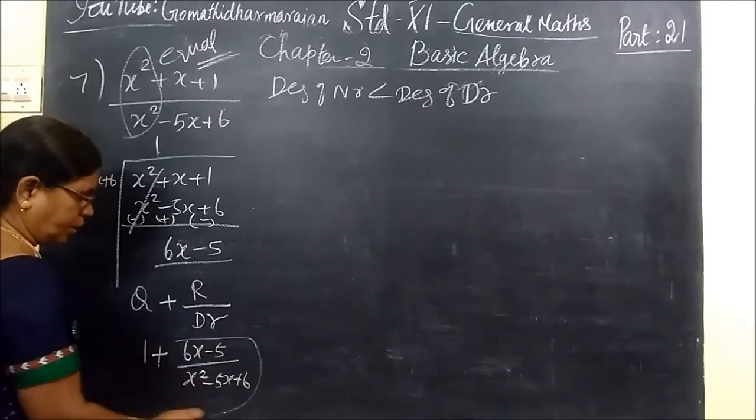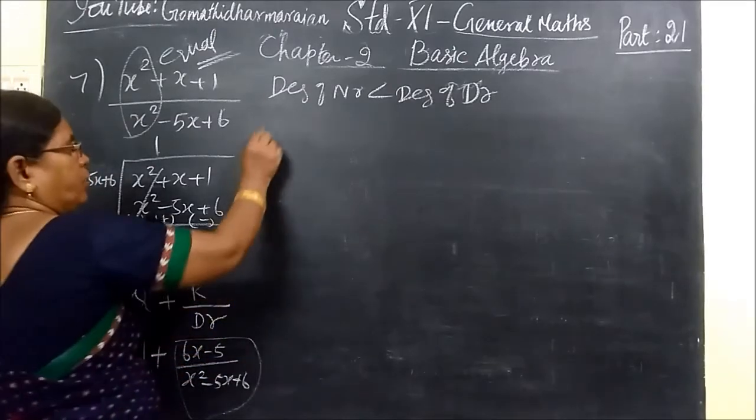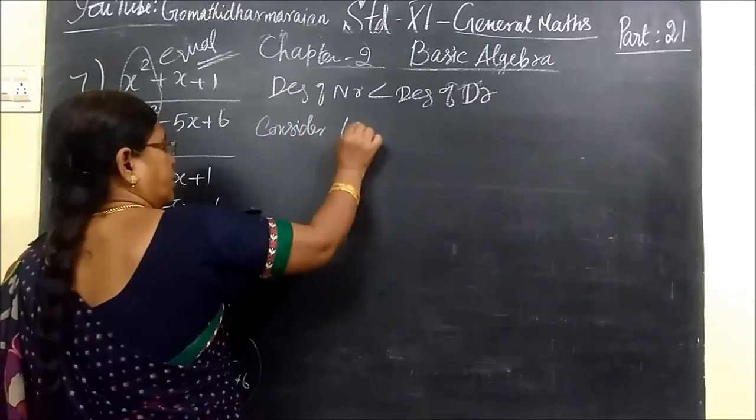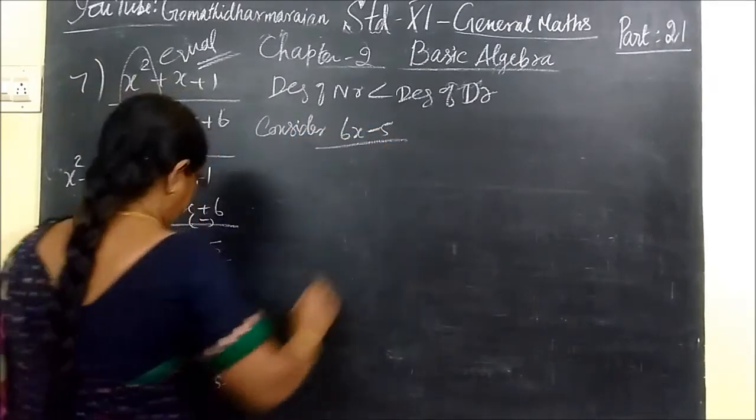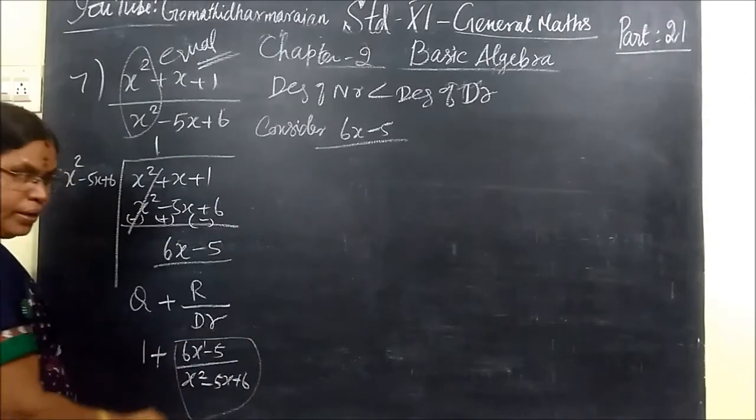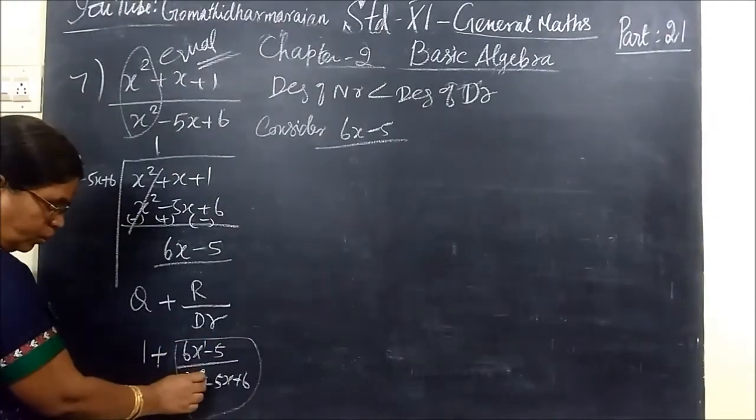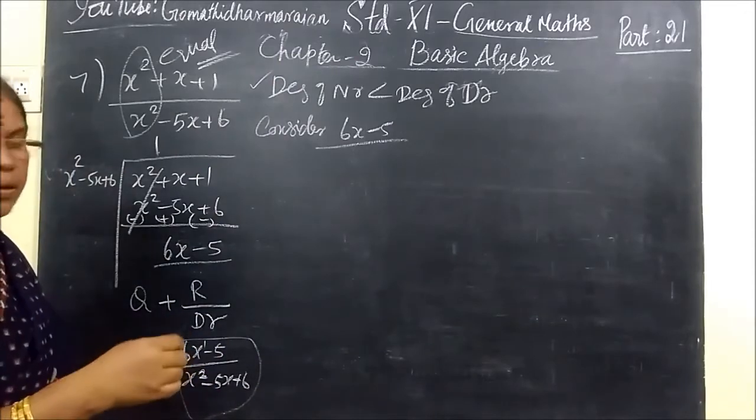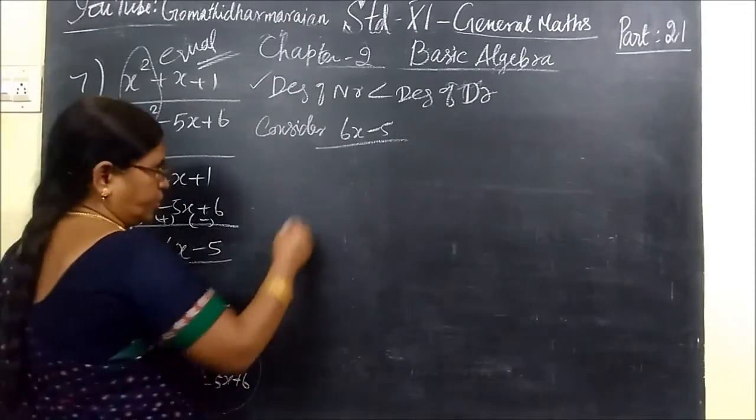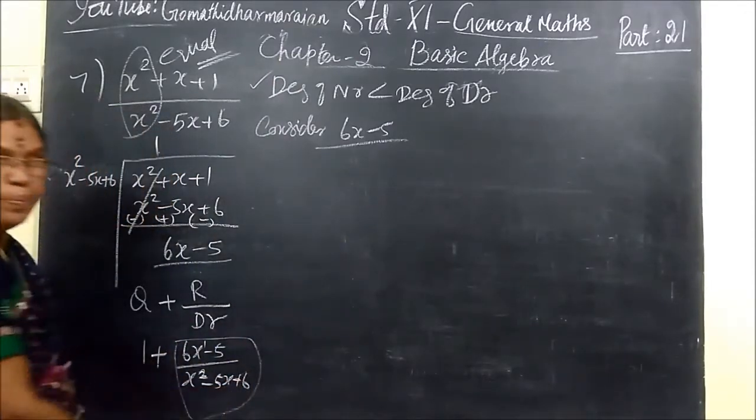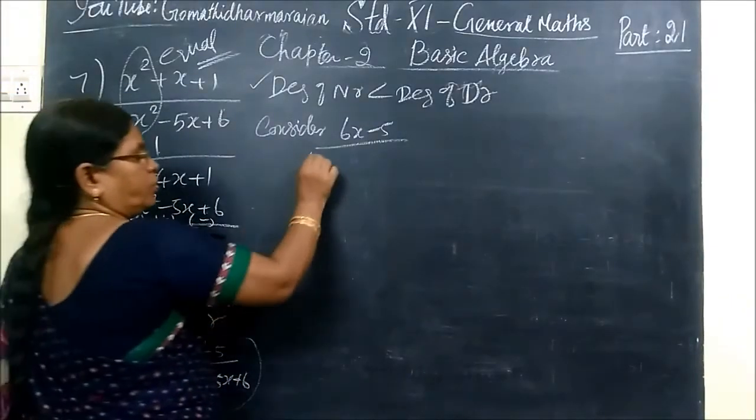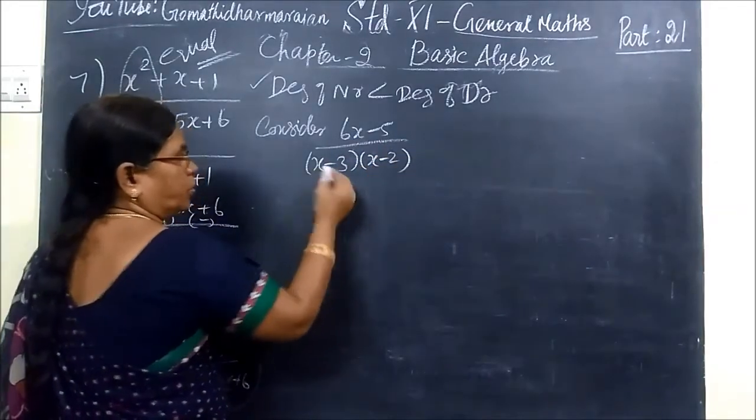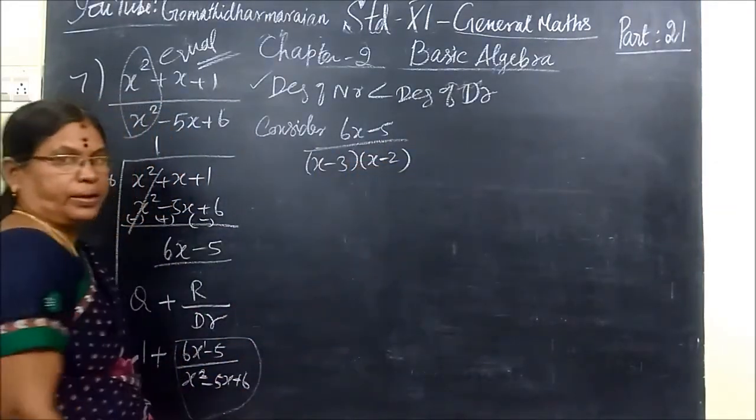You consider this only. This is the motto. Consider this quantity, consider numerator 6x minus 5. Once you check it, degree of numerator 1, degree of denominator 2. So condition satisfied. So you write into, you split into factors first. Here multiply is plus 6, add means minus 5, so that you can write x minus 3, x minus 2. So denominator you have factorized.